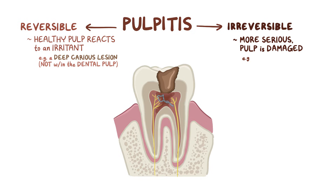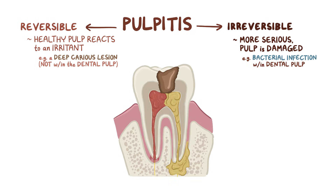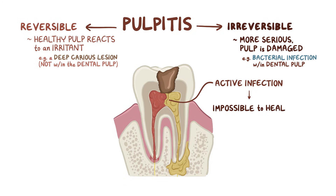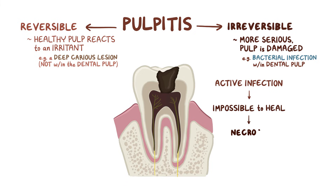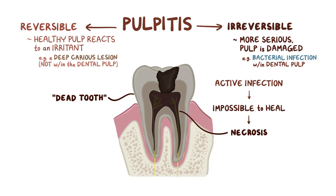For example, there may be a bacterial infection within the dental pulp. Usually, when there's an active infection within such an enclosed space, it is virtually impossible for the dental pulp to heal. Over time, the pulp undergoes necrosis, creating a dead tooth. Eventually, the bacterial infection can spread to surrounding tissues and bone.